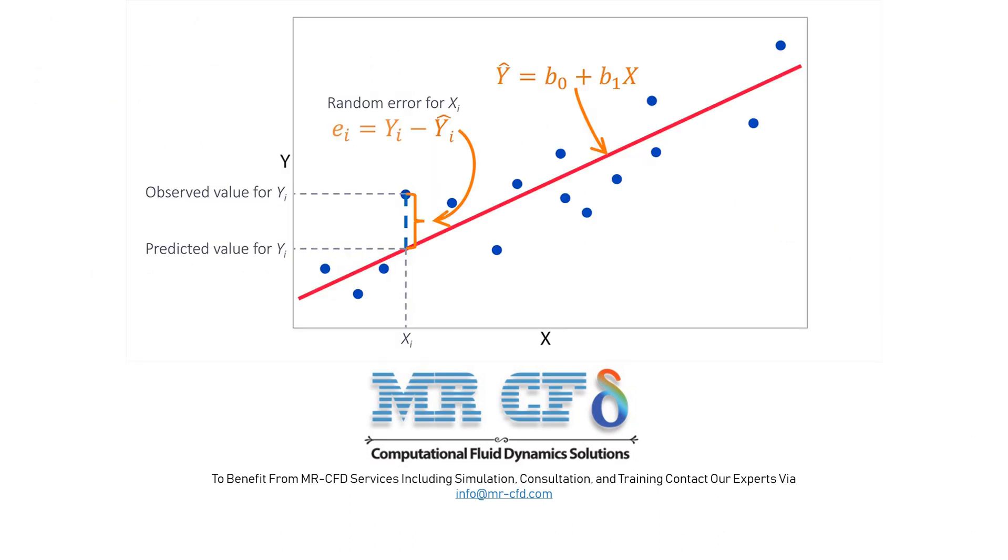One of the common methods of the estimation process is to use the least squares error method, in which the sum of the squares of the difference between the estimated values of the equation and the values obtained from the software solution is minimized.